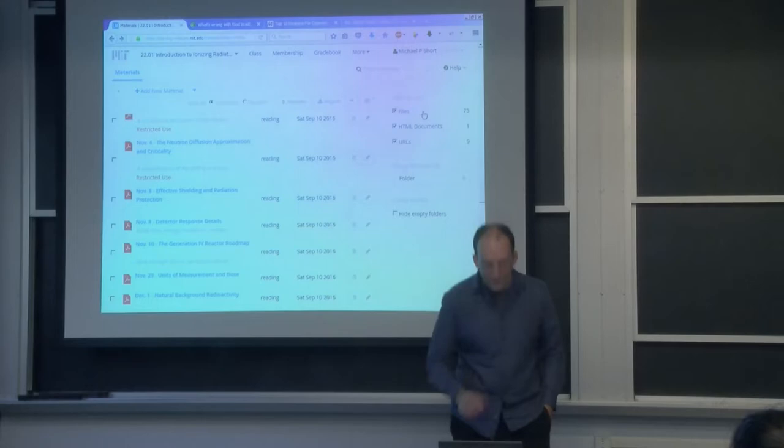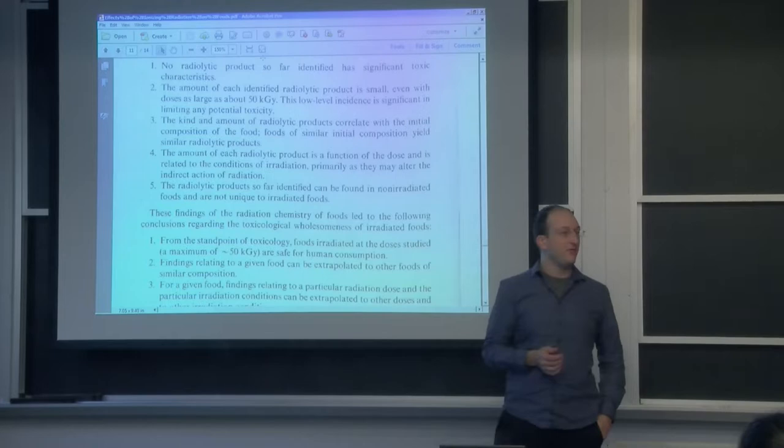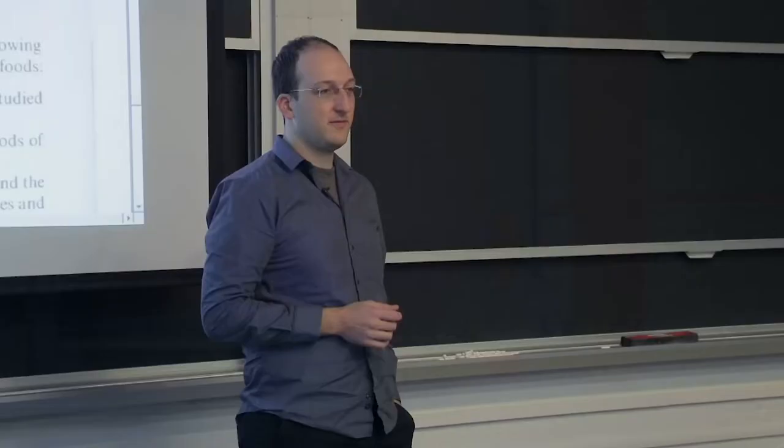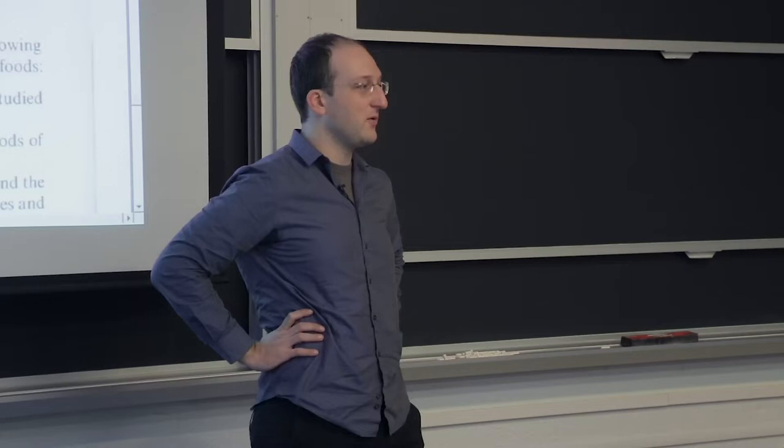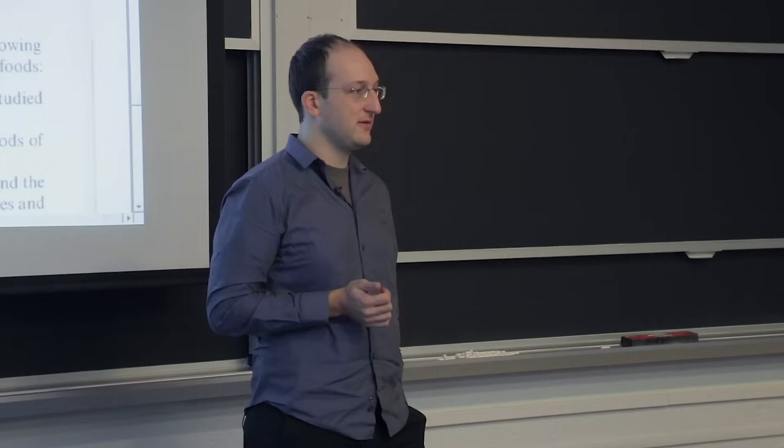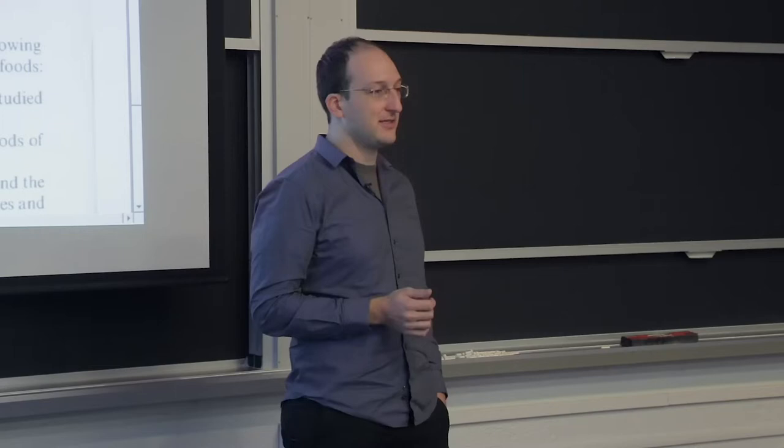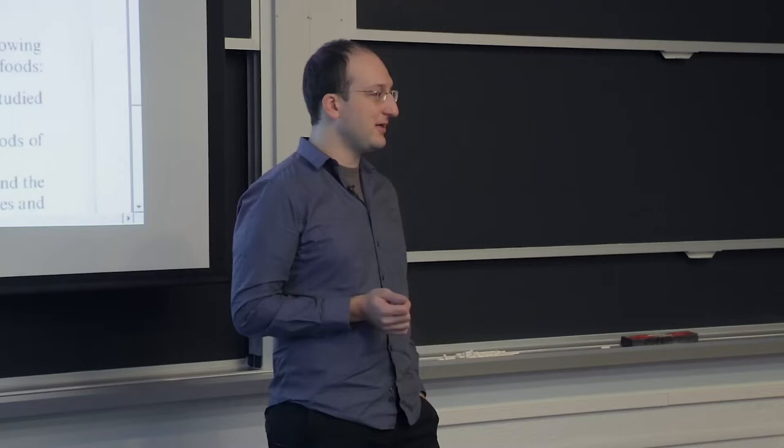The general idea for anyone that got into the reading is that we irradiate food to do a whole bunch of different things. Can anyone tell me what are some of the reasons one might irradiate food? It gets rid of E. coli, bacteria, other harmful organisms, insects. Yeah, it's actually used to either kill or sterilize insects so they don't breed.